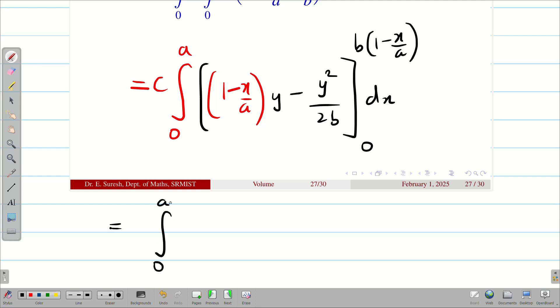Integral 0 to a, c is constant. Lower limit is going to be 0 obviously. When you substitute the upper limit, we get b times (1 minus x by a). Here also we have 1 minus x by a, so we get (1 minus x by a) whole square. For the second term, 1 by 2b is constant. When you apply this, we get b square (1 minus x by a) whole square dx. Now, bb will get cancelled. We can take b as common from both terms.